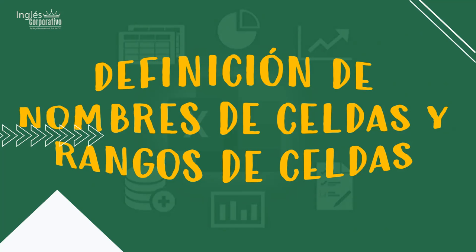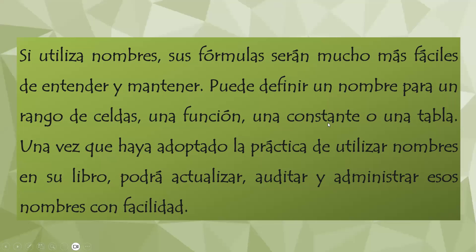Para este día hablaremos sobre los nombres de celdas o nombres de rangos de celdas. A esta fecha nosotros sabemos los nombres predeterminados de celdas. Ya hemos mencionado que un nombre de celda es un A1, un M7, un L40, un L50. Esos son nombres predeterminados. Pero también podemos utilizar nombres personalizados, que nosotros podemos asignar a una celda o a un rango para que sean más fáciles de entender o más fáciles de recordar.